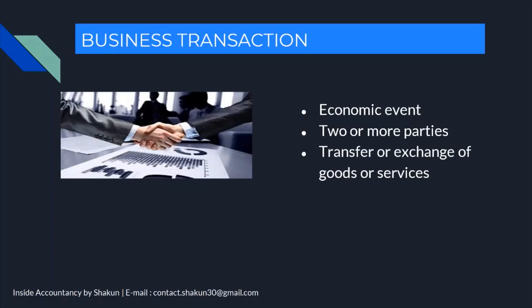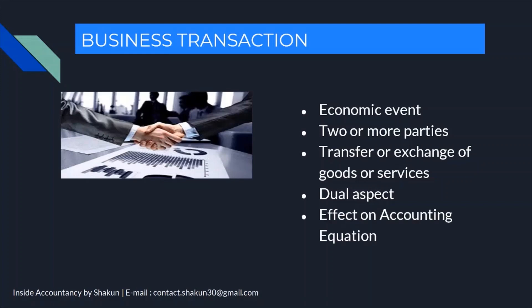These parties must indulge in the transfer or exchange of goods or services. Every business transaction has a dual aspect — it follows the double entry bookkeeping system where every transaction has a debit as well as a credit. Debit and credit are always equal, therefore the business transaction also has an effect on the accounting equation, which means assets are always equal to the sum of liabilities and capital.